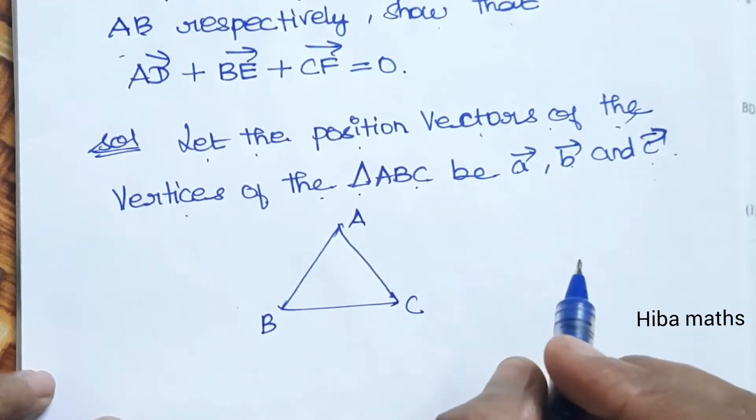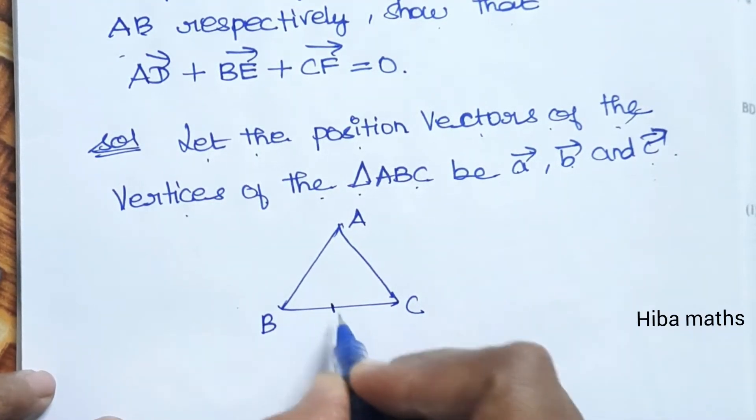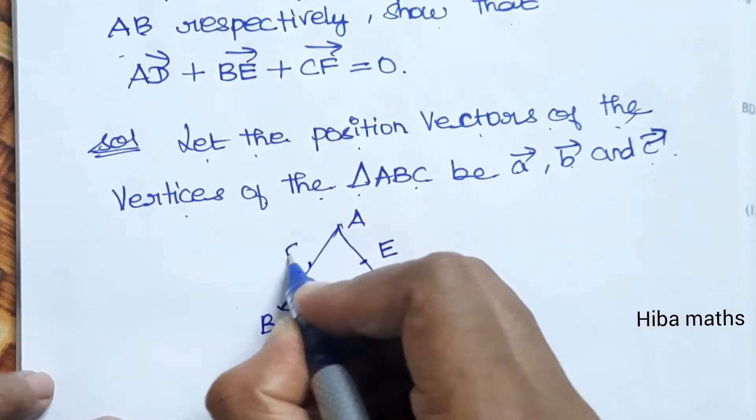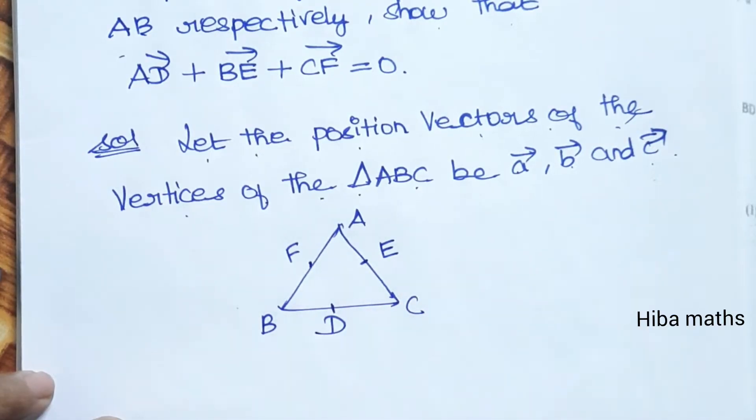Now in the question, D is the midpoint of side BC, so here is D. E is the midpoint of AC, so here is E. And F is the midpoint of AB. Now let's find the values of D, E, F.